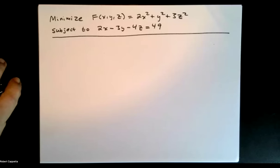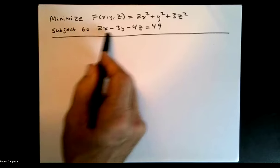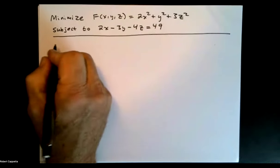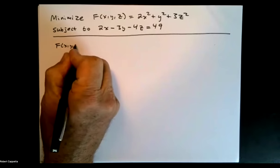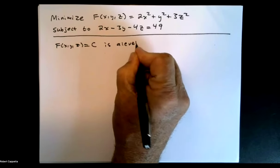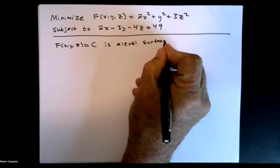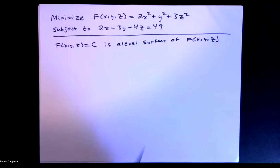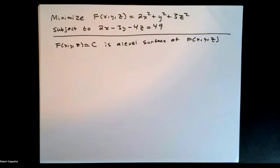Let's go through our process. We're thinking about level curves, or in this case, level surfaces. So F of x, y, z equals a constant is a level surface of F. That's what we were looking at on Desmos — plugging in various values for c to see what we get. All of those surfaces are level surfaces of that function F.